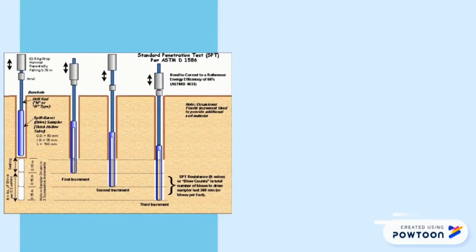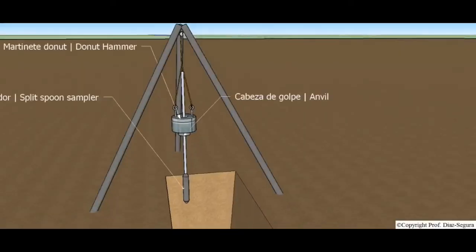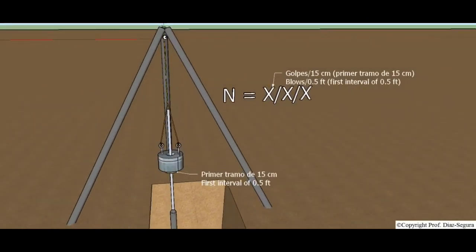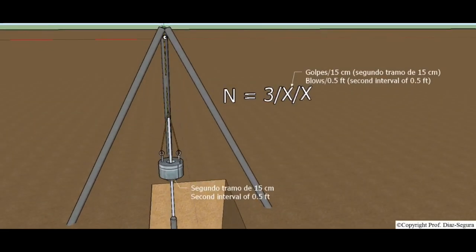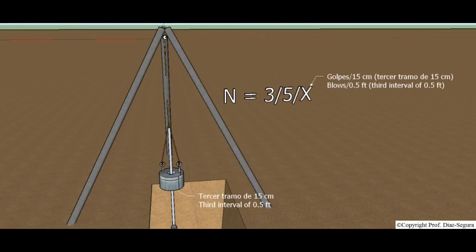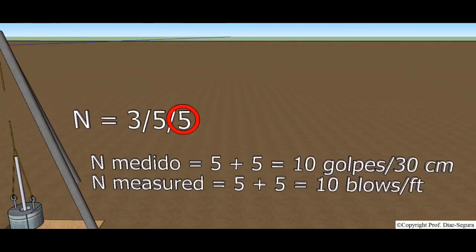The soil penetration test is an in-situ dynamic penetration test designed to provide information on the geotechnical engineering properties of soil. The test is conducted in a borehole by means of a standard split spoon sampler. Once drilling is done to the desired depth, the drilling tool is removed and the sampler is placed inside the borehole. The number of blows of a hammer required to drive a depth of 150mm is counted.